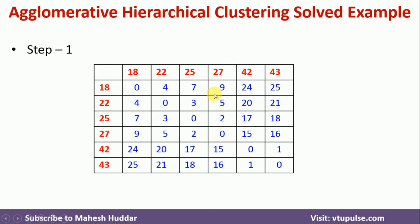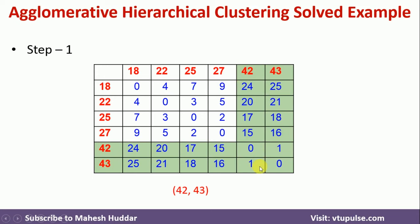Once we have the distance matrix, we observe it carefully to find the minimum distance between any two data points. The distance between 42 and 43 is 1, which is the minimum among all values. So we merge 43 into 42, creating a cluster consisting of 42 and 43. We remove the row and column for 43, and this is how the updated matrix looks after that.